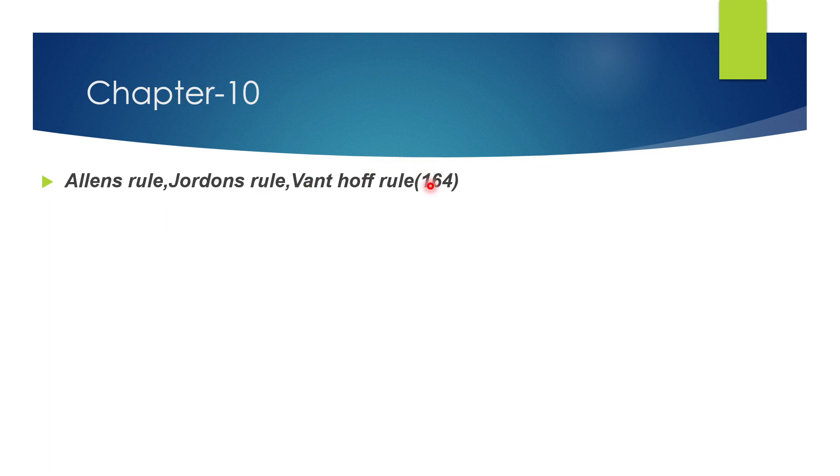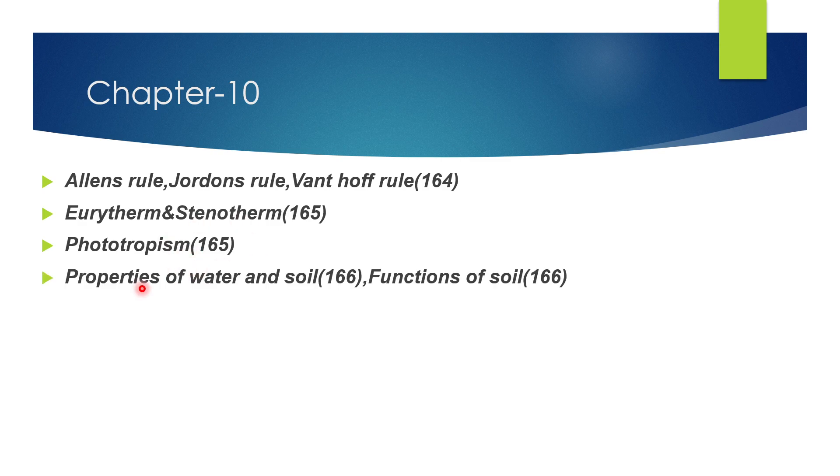Next question: difference between eurytherm and stenotherm, page number 165. Next, define phototropism, page 165. Next, write the properties of water and soil and functions of soil. Page number 166. Properties of soil and water - this is sometimes a five mark question. The headings would be two marks, but it can come as a five mark as well, so plan accordingly and study that.